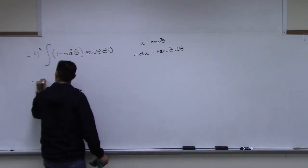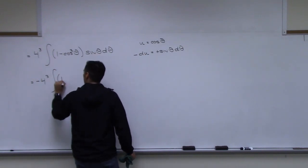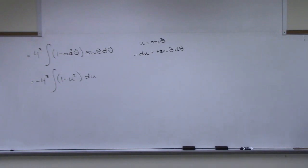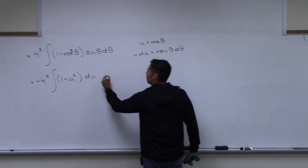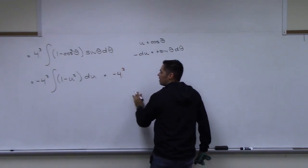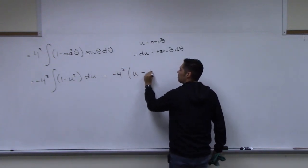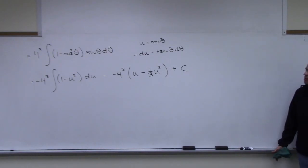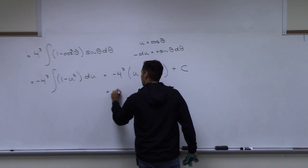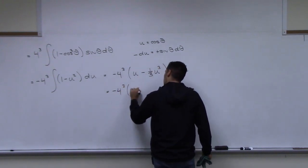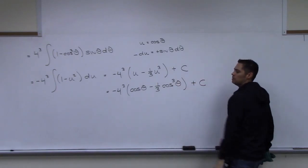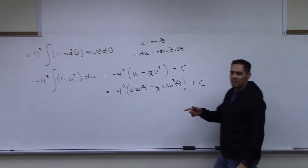Rewriting: we get negative 4³ times the integral of (1 − u²) du. Integrating: negative 4³ times (u − (1/3)u³) plus C. Substituting back u = cos theta gives: negative 4³ times (cos theta − (1/3) cos³ theta) plus C.